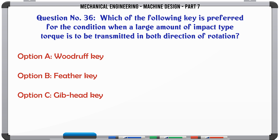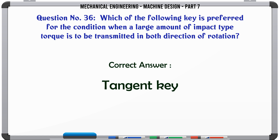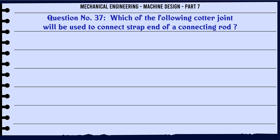Which of the following key is preferred for the condition when a large amount of impact type torque is to be transmitted in both directions of rotation? a) Woodruff key, b) feather key, c) jib head key, d) tangent key. The correct answer is: tangent key.